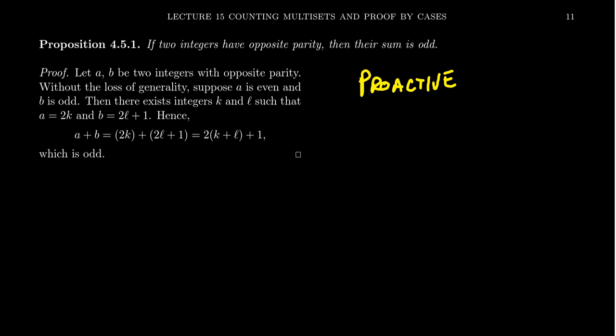One important caution: when you use phrases like 'without loss of generality' or 'the second case is handled similarly,' it must genuinely be true that the cases are similar and a second proof is unnecessary. Many beginning proof writers are sometimes tempted to use these phrases when they only know how to do one case, or are simply being lazy. They claim the cases are similar when in reality they may not be — essentially bluffing. You should be careful, because without loss of generality used as a bluff is poor practice.